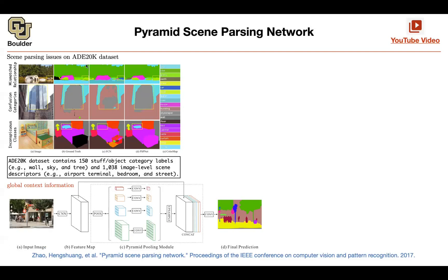This is a nice dataset to work with. It's pretty big. It has a lot of classes — objects and stuff. Objects are airport terminal, bedroom, street — these sorts of classes. And stuff, if you hear them, are just wall, sky, tree. And what is the solution here?